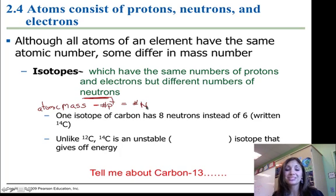So carbon-14 has eight neutrons instead of six, and it's denoted as the atomic symbol carbon, letter C, with the 14 in the upper left-hand corner. Unlike carbon-12, carbon-14 is unstable. It's what we call radioactive, a radioactive isotope.